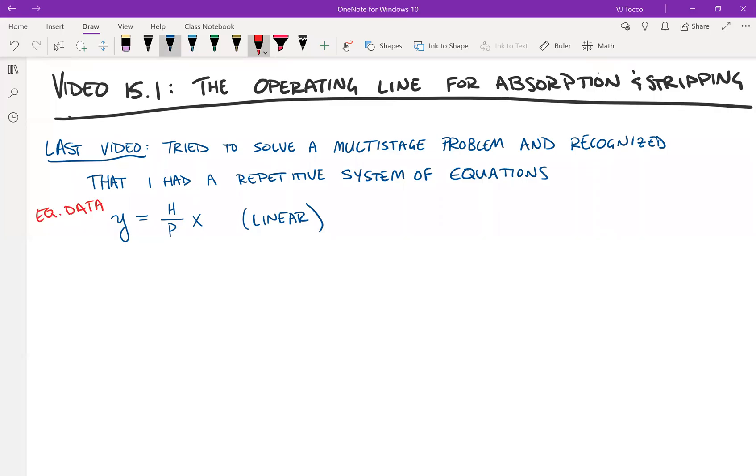So let's begin the derivation process. Remember that an absorption column is going to look kind of similar to a distillation column. We'll number the stages from top down, just like we did for the distillation column.